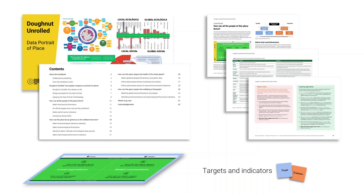It zooms into each of the core questions of Donut Unrolled, offering step-by-step guidance based on experiences in real-world places, especially cities such as Amsterdam and Brussels, together with examples, insights, and other resources. We've done our best to make it as concise and informative as possible, but it's a work in progress. We're learning what's useful as we collaborate with many change makers worldwide, and we invite all of your contributions and adaptations so that we can continue to make it better.